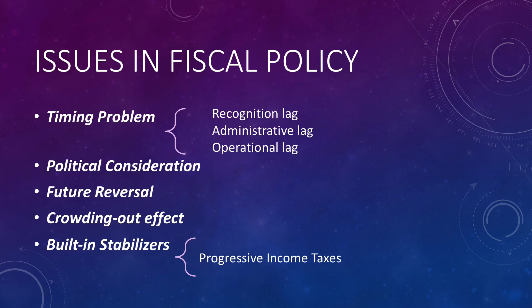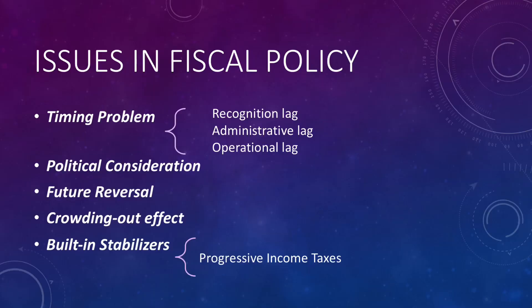Second, political considerations should be taken into account. This is especially true if candidates can run for re-election, as they may influence the economy to make themselves win again. Next, we have future reversals: if there is a decrease in taxes, we will not necessarily increase spending because we might view it as temporary and therefore not take the action the government intends. Then we also have the crowding effect: when government spends, it usually borrows, and by borrowing, the cost of funds increases for private businesses. As a result, the government increases spending at the expense of decreased private sector spending, canceling out the fiscal policy.